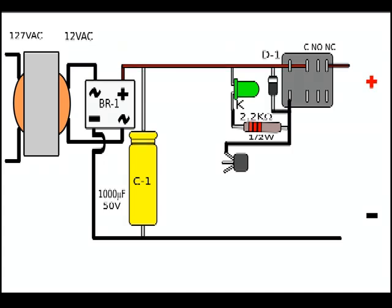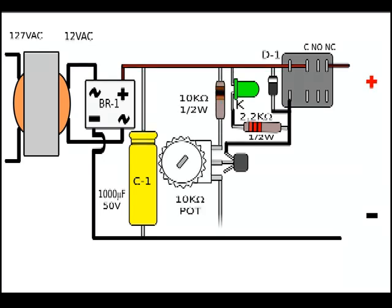In parallel with the relay coil, you must connect a small reverse bias diode, in order to avoid damage to the transistor and the LED indicator.